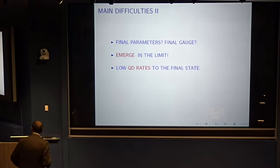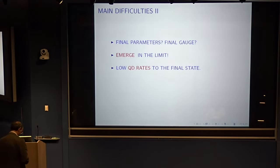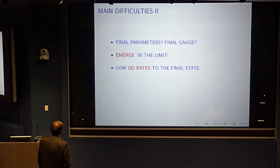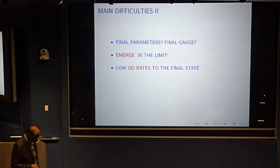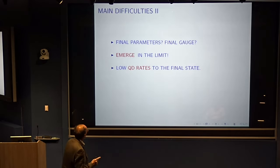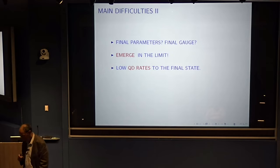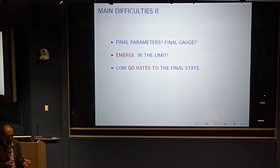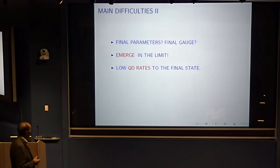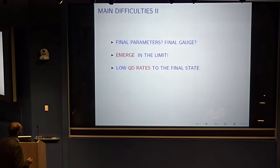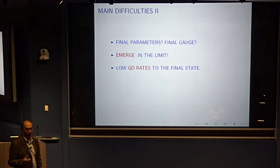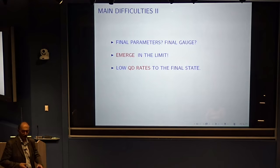It is not just the final parameters; there is also the final gauge. The gauge is of fundamental importance, and the final gauge can only be seen in the limit. As I construct the solution, I constantly have to change the coordinate system in which I describe the character of the solution. So as I construct the solution, I also construct a new gauge at each step. That is the most difficult thing in the whole proof — understanding this gauge condition — since this final gauge only emerges in the limit and cannot be known a priori.